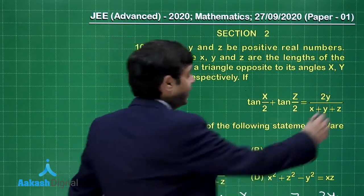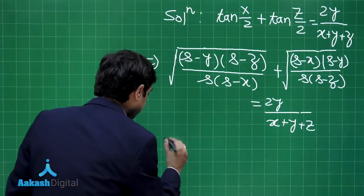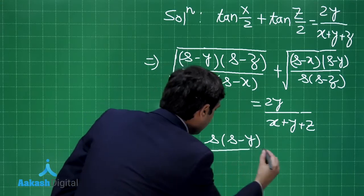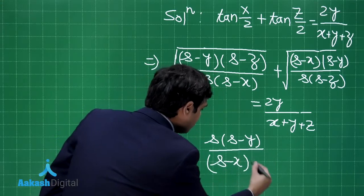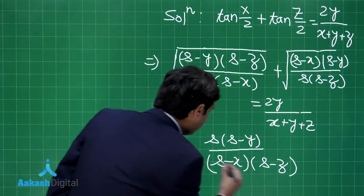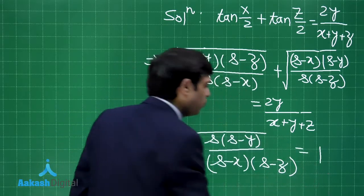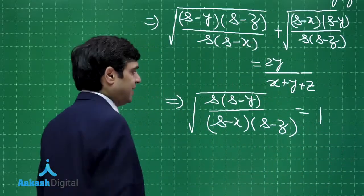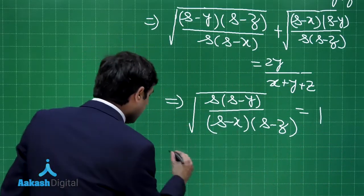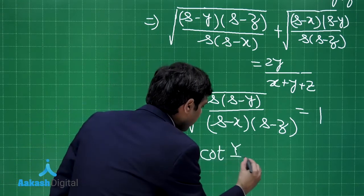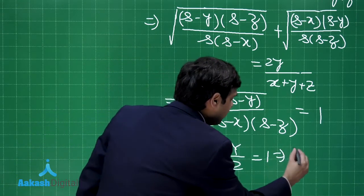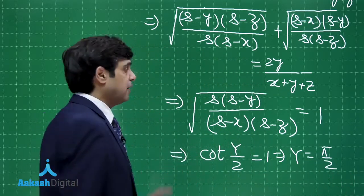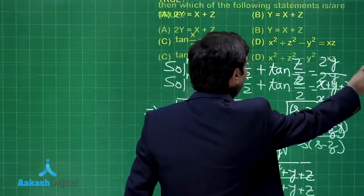When you simplify, you end up with the result: square root of s(s−y) / [(s−x)(s−z)] = 1. That is simply cot(Y/2), and so cot(Y/2) = 1, which gives angle Y = π/2 because Y/2 = π/4.